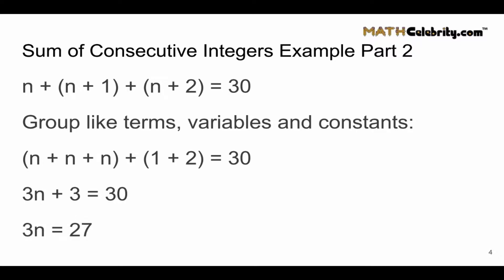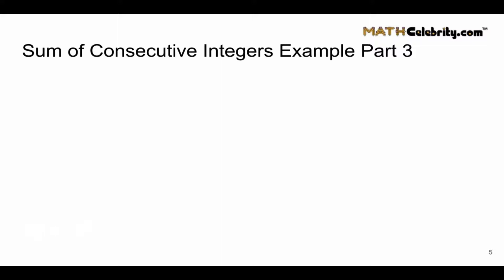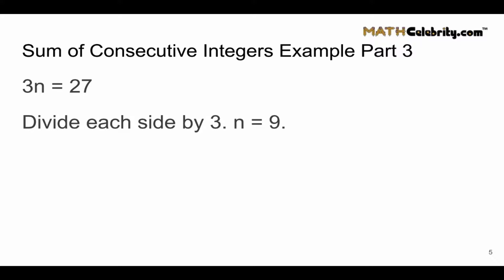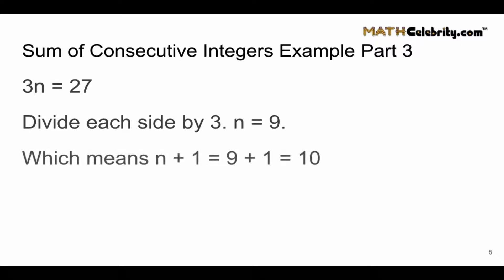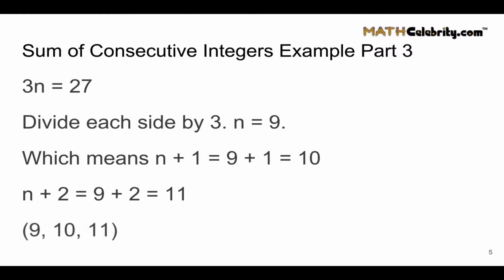If we subtract 3 from each side and simplify, we get 3n equals 27. Now for part three: divide each side by 3 and we get n equals 9. This is our first integer. The second integer is n plus 1, and when n is 9, that gives us 10. The third consecutive integer is n plus 2, so 9 plus 2 is 11. The three consecutive integers that add up to 30 are 9, 10, and 11.